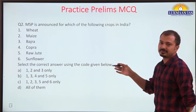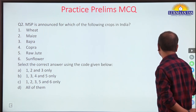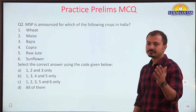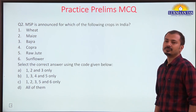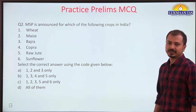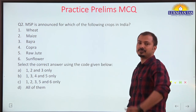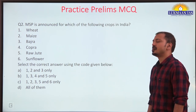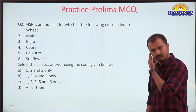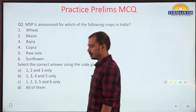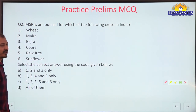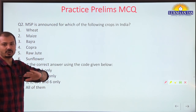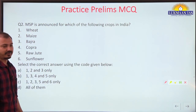UPSC asks questions where 5-6 crop options are given and they ask which of them are leguminous plants or which ones do nitrogen fixation. It is difficult to remember all 23 crops, but divide them into coarse grains and pulses, oil seeds, and cash crops to remember them.